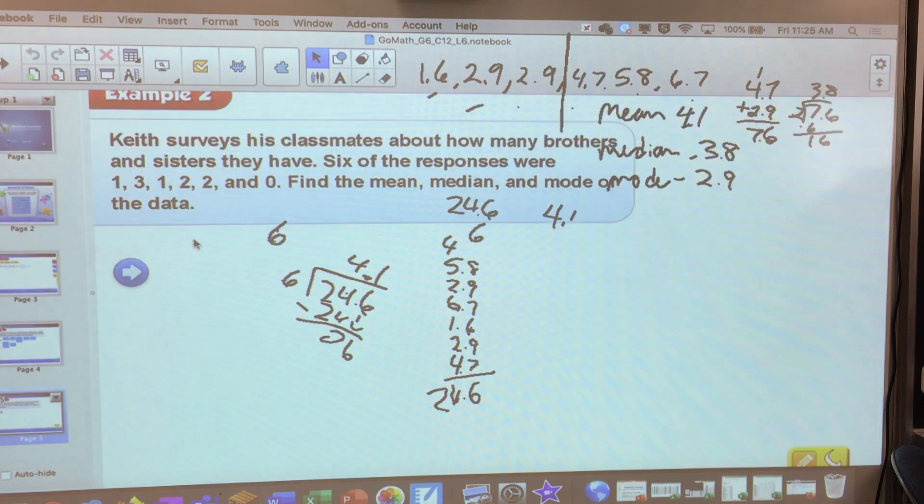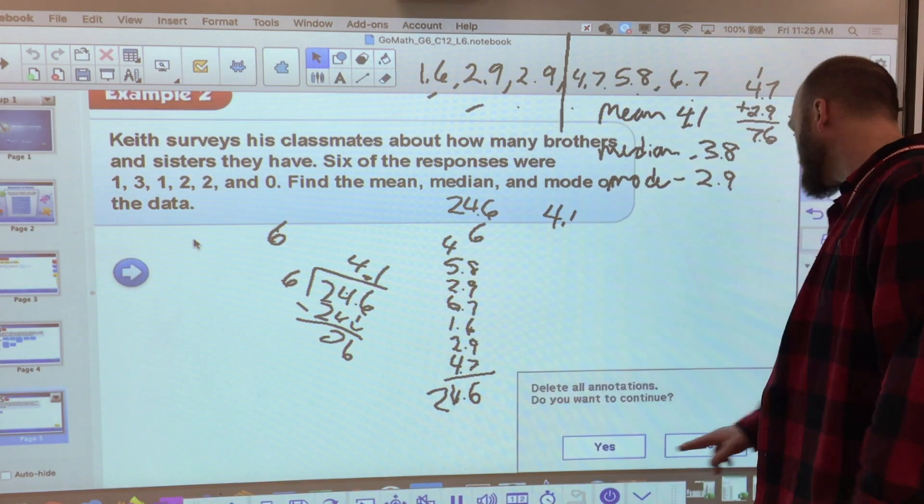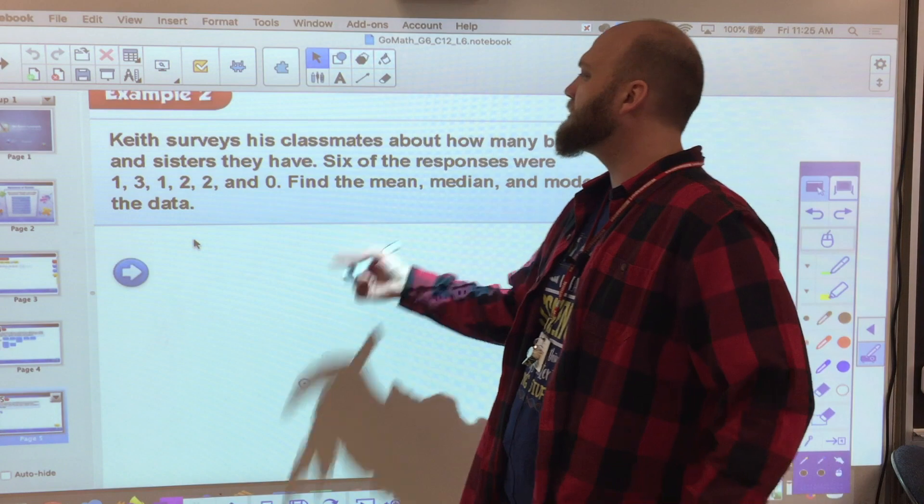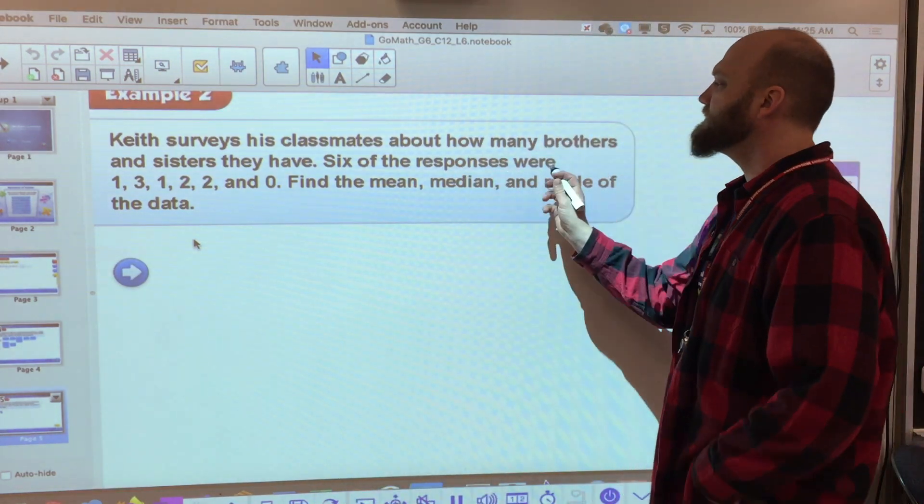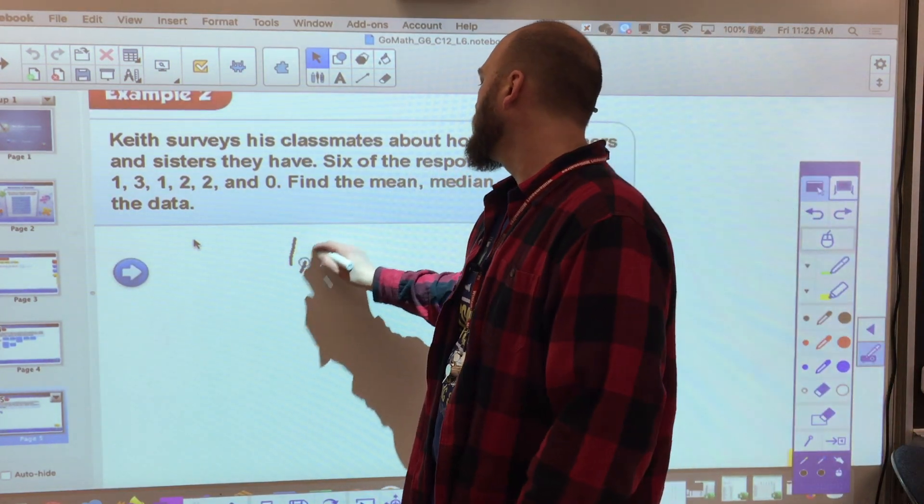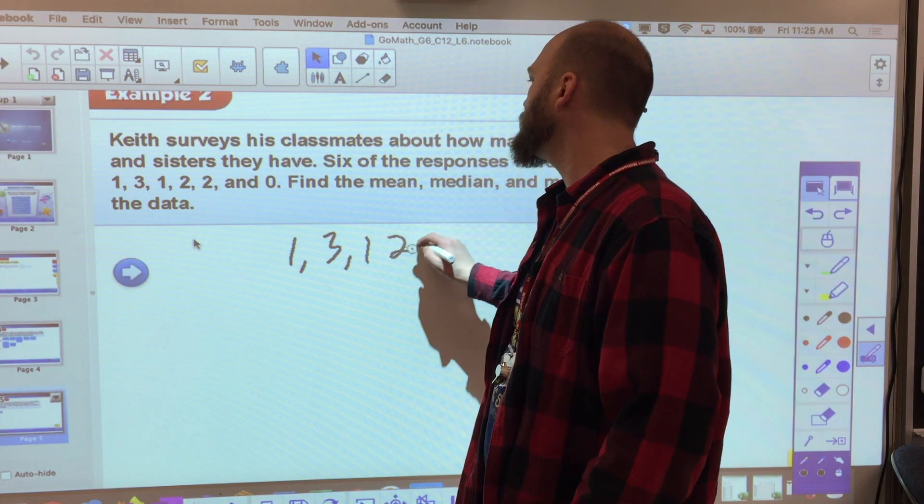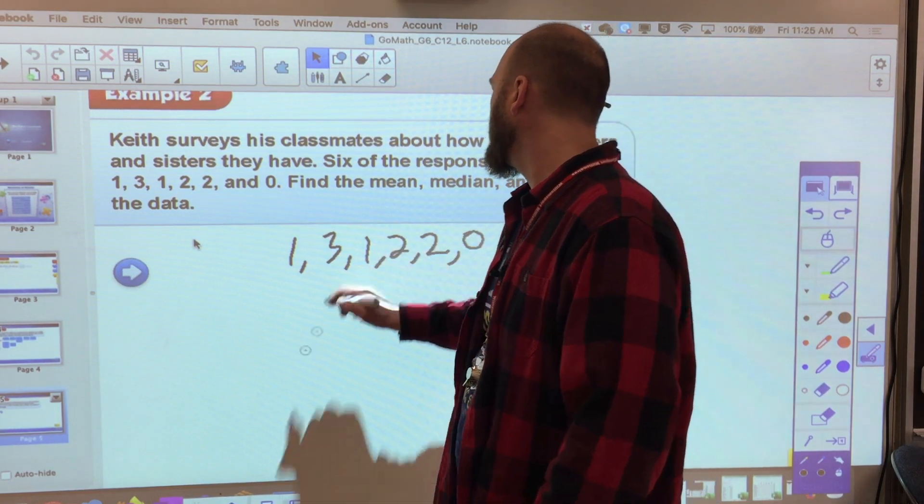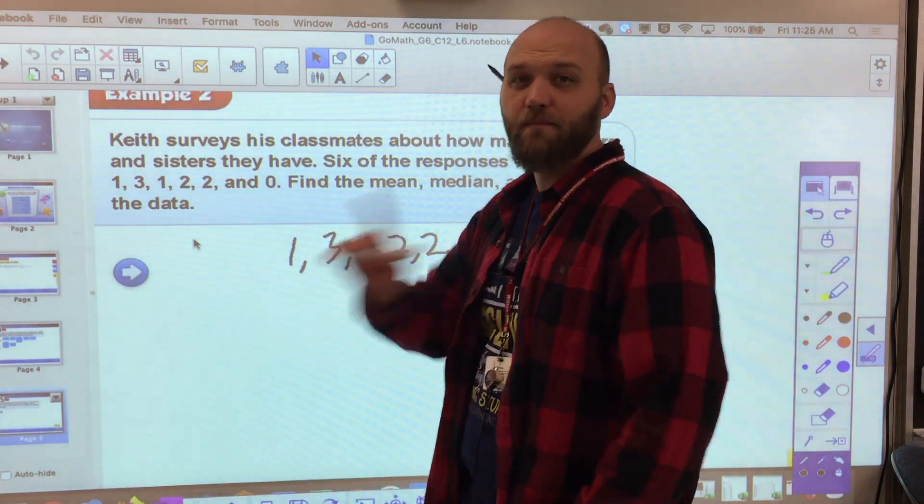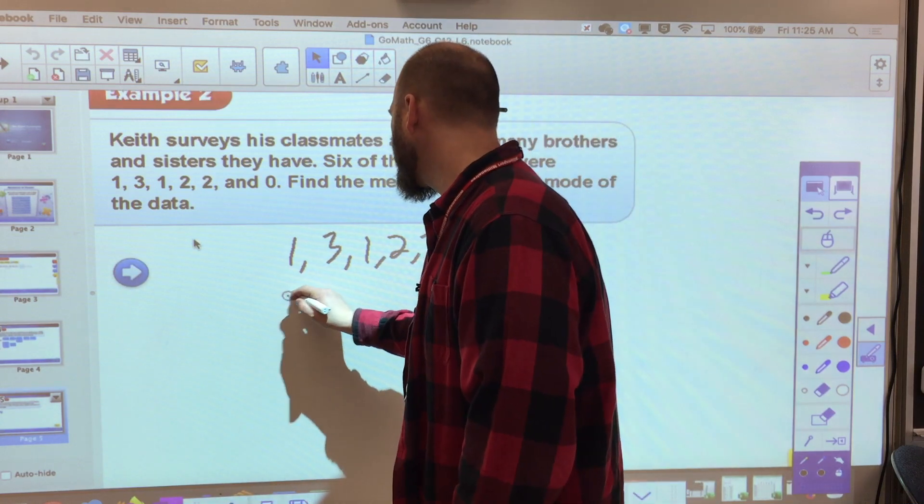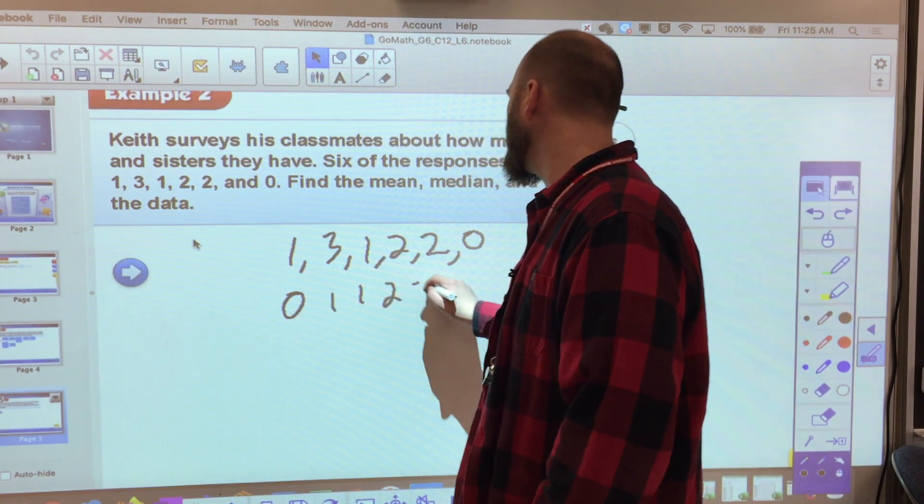Let's do one more. And we're going to do Keith. This is example two in your book. Keith surveys his classmates about how many brothers and sisters they have. Six of the responses were 1, 3, 1, 2, 2, and 0. Now, I want to organize them smallest to greatest. 0, 1, 1, 2, 2, 3.